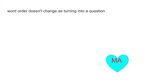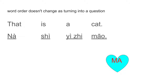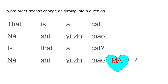Secondly, word order. The English word order is quite similar to Chinese word order. 'That is a cat' — na shi yi zhi mao. Word for word, the translation is alike. In English, when you turn this sentence into a general question, 'is' and 'that' change their places. But in Chinese, na shi yi zhi mao stays the same — you just have to add 'ma'. Ma is a question word at the end to form a question.